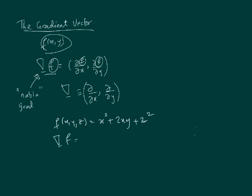So basically, it's as simple as saying that grad f is just the x derivative of this, which is 2x plus 2y, the y derivative, which is 2x, and the z derivative, which is 2z.